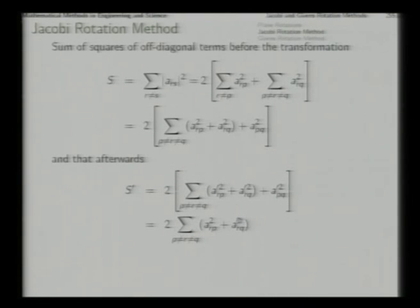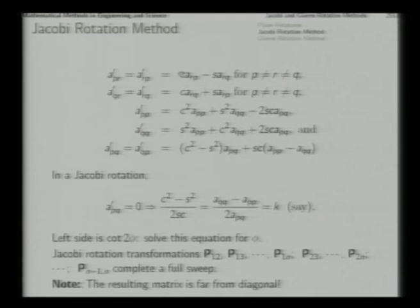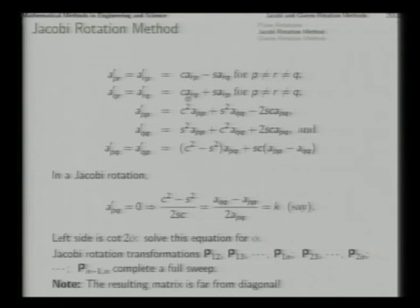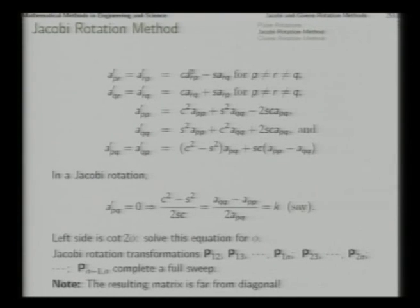When we calculate the same sum for matrix A-prime, through this Jacobi rotation P-pq we have set A-pq-prime to 0. Comparing the two sums, you will notice that this sum and this sum are actually equal — because squaring and adding the transformed terms with c² and s² yields A-rp² plus A-rq², since c² plus s² equals 1 and the cross terms cancel. So A-rp-prime squared plus A-rq-prime squared equals A-rp squared plus A-rq squared.